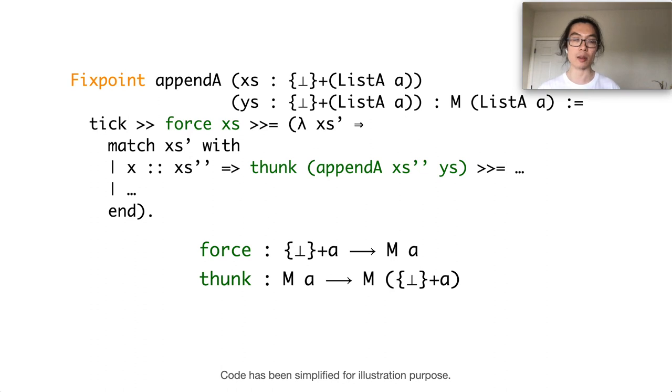Inside the pattern matching, in the case that xs is not an empty list, we want to make a recursive call. Instead of making the recursive call directly, we wrap it inside the thunk operation.